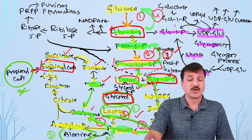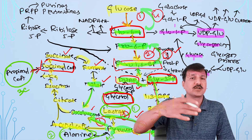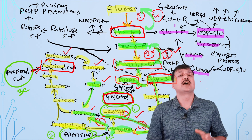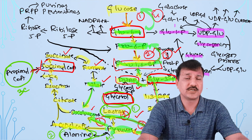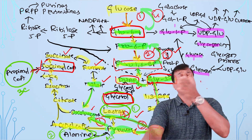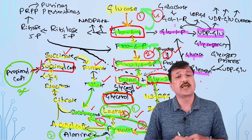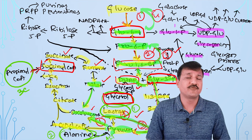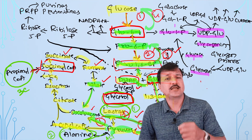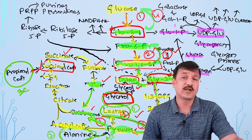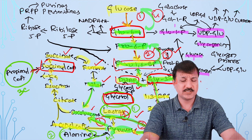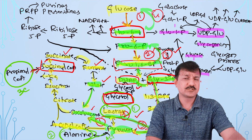Glucose-1-phosphate is converted to glucose-6-phosphate, then to glucose by glucose-6-phosphatase in the endoplasmic reticulum — this is how the liver releases glucose into the blood from glycogen. Skeletal muscle and other tissues use their stored glycogen for their own energy needs and do not contribute to blood glucose. Only liver glycogen contributes to blood glucose levels during fasting. Insulin promotes glycogen synthesis by keeping glycogen synthase active; glucagon promotes degradation by keeping glycogen phosphorylase active.